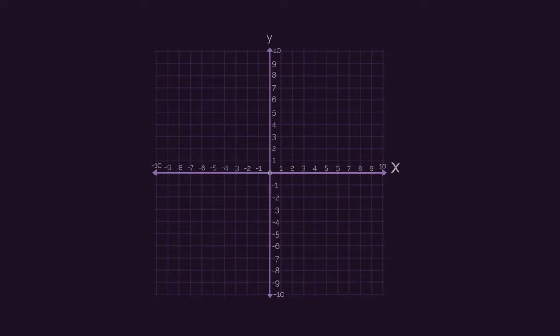On graphs though, you do need to be careful, because lines going in this direction have a positive gradient, whereas lines going in this direction have a negative gradient.